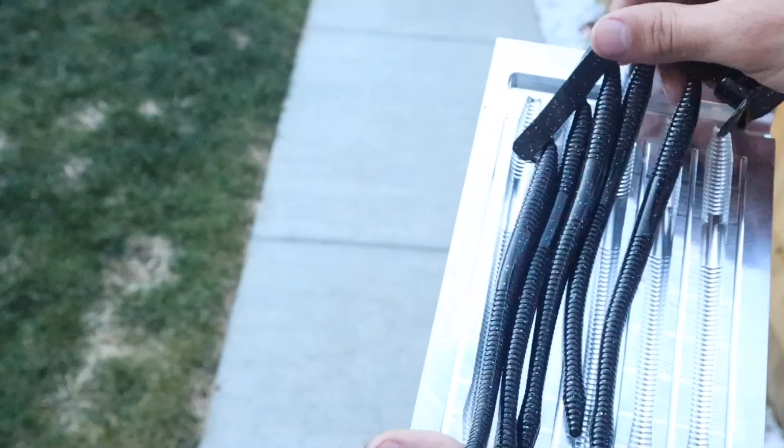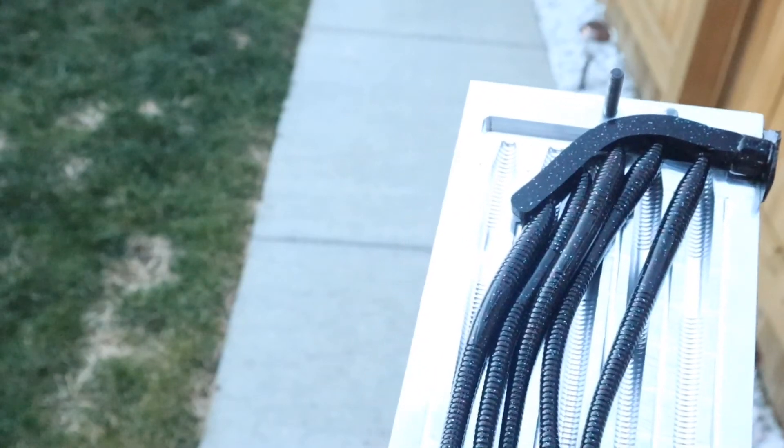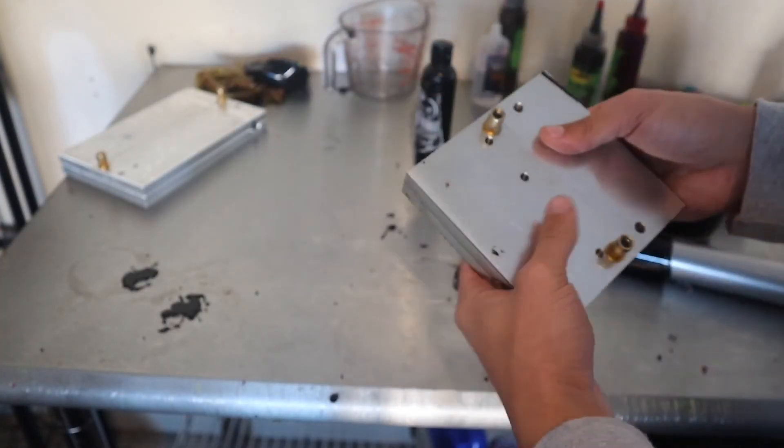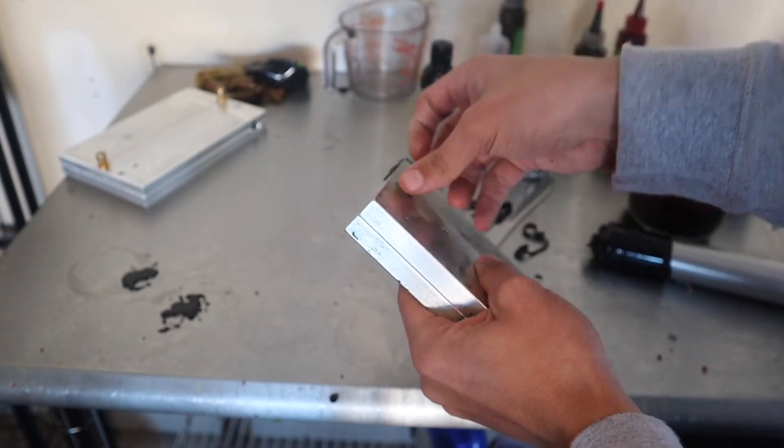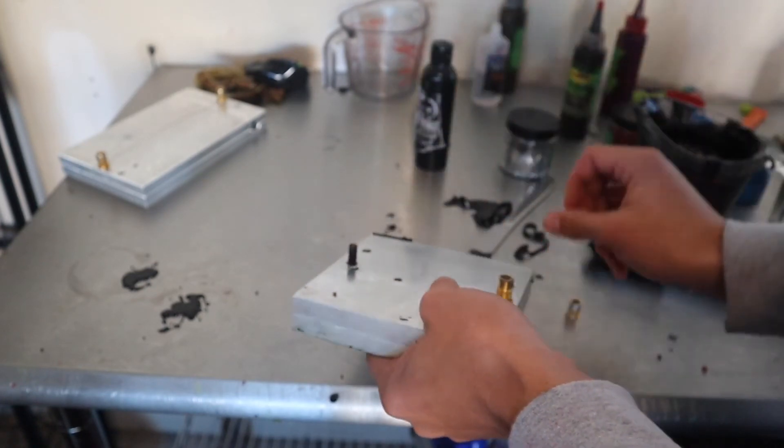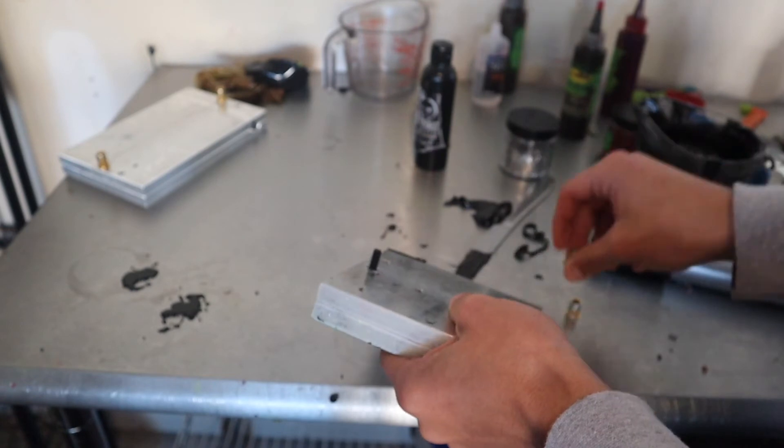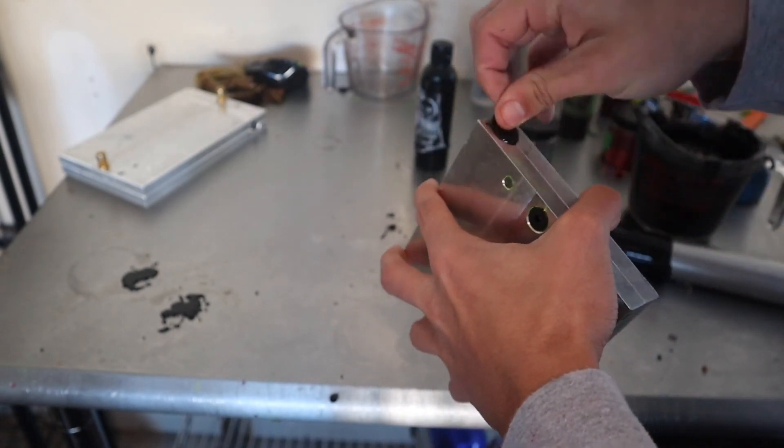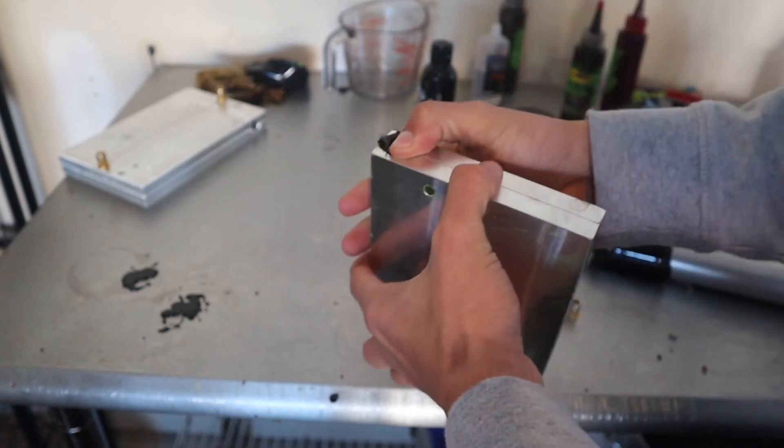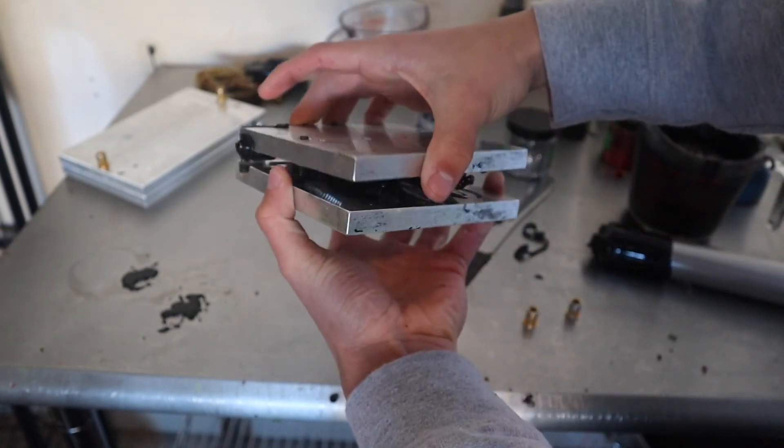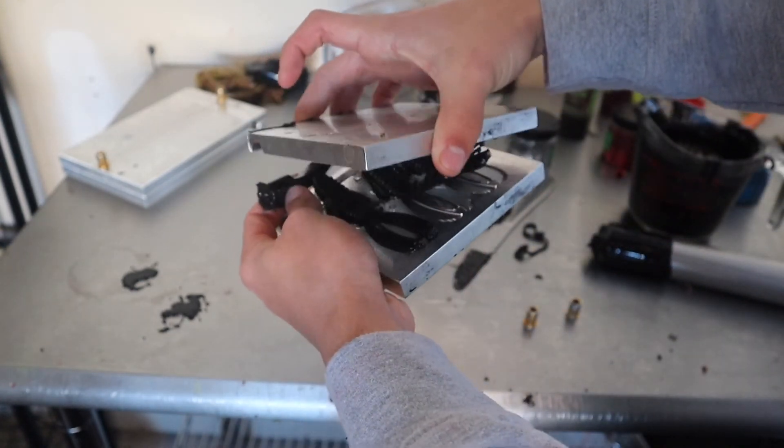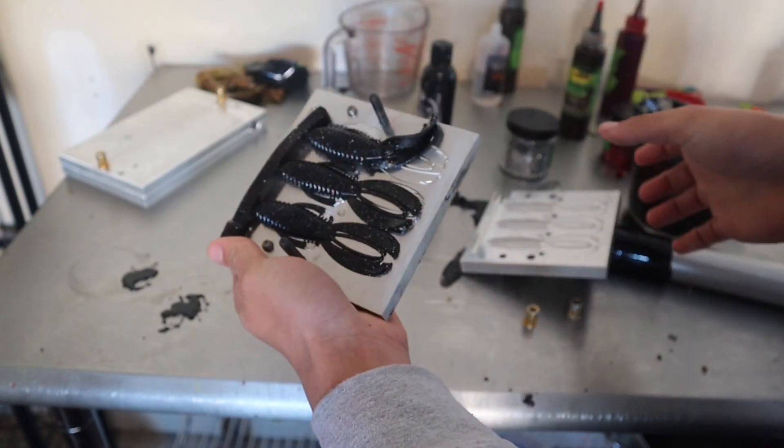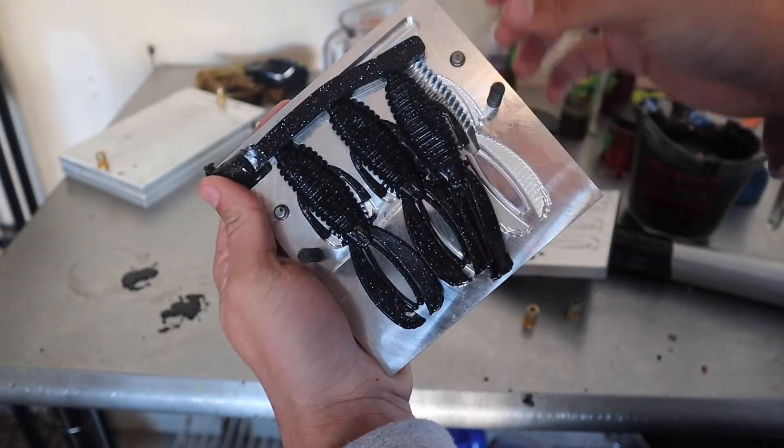Love these guys, these are a killer right here. Let's see how the creature bites turned out. All right, so now I'm going to open up our creature bites here, see how these guys turned out. Got stuck together, this mold always gets stuck. There we go. Oh yeah, absolutely gorgeous baits.